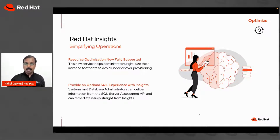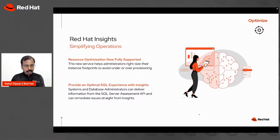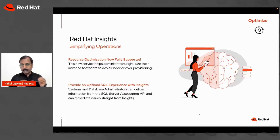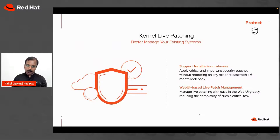Red Hat Insights provides an Ansible playbook to remediate those issues. You can run that playbook not just on one machine but across your entire estate, fixing issues with a single click. This is unique to Red Hat Enterprise Linux — it doesn't come with any other Linux distribution or community version. You just have to activate it; it comes included with any Red Hat Enterprise Linux subscription.